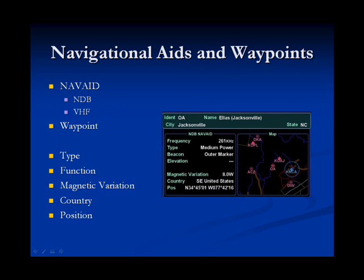Included with every fix is the fix identifier, the name, city, and state. Shown here is the NDB navigational aid.